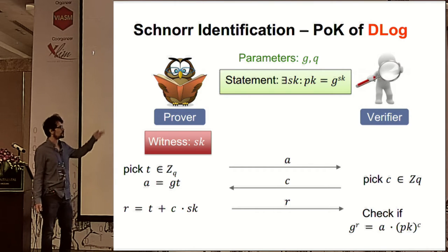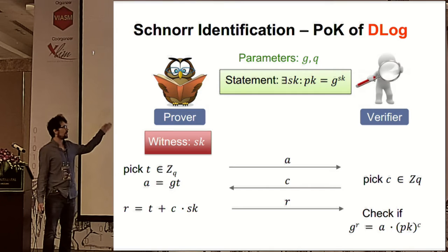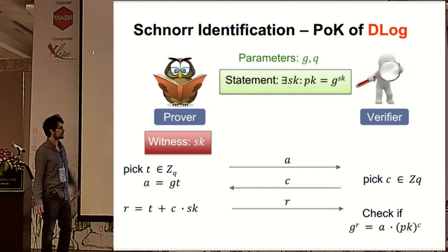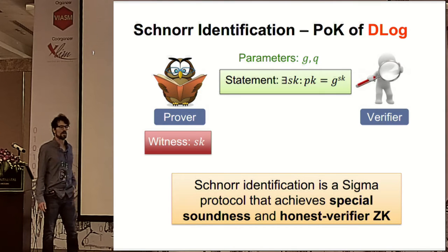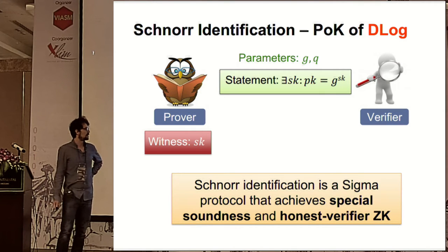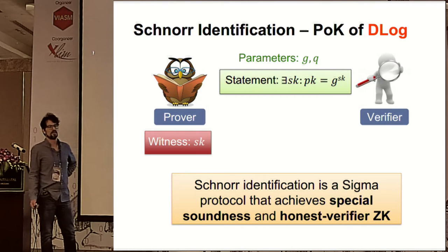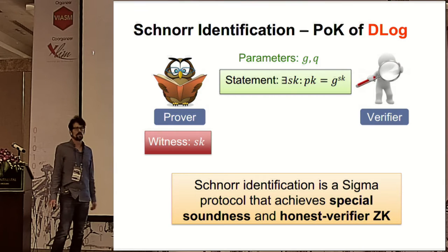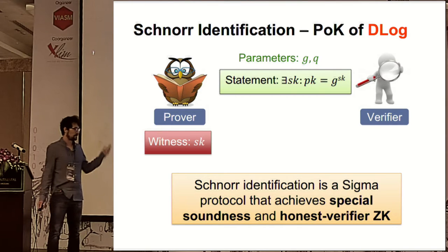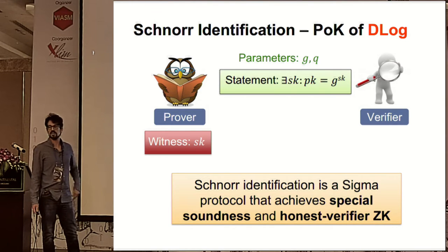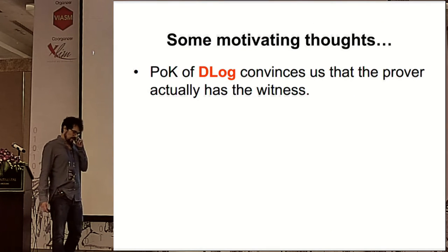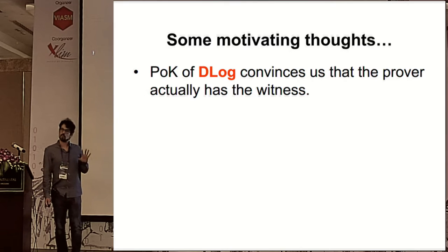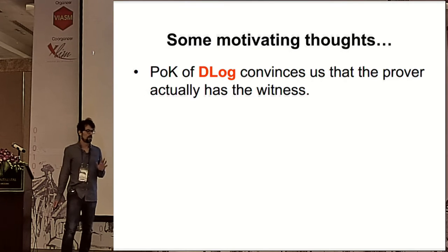A very prominent example is the Schnorr identification scheme, which is essentially a proof of knowledge of a discrete logarithm. It runs in three moves: the commitment a, the challenge c, and the response r. It is what we call a sigma protocol — an interactive proof, public coin, three moves, achieving special soundness, a strong proof-of-knowledge property, and zero knowledge against an honest verifier.